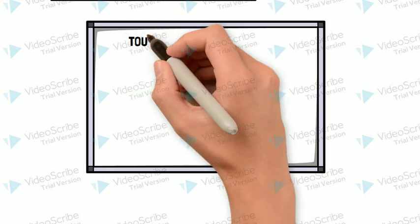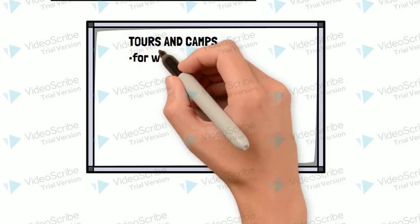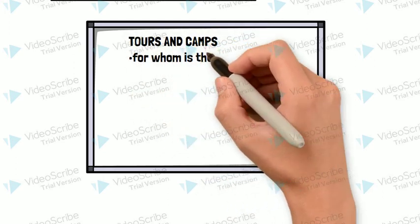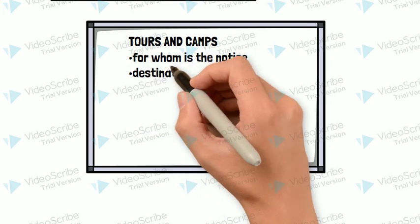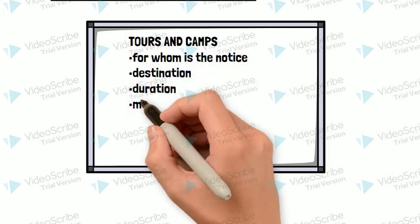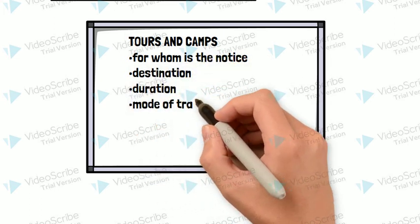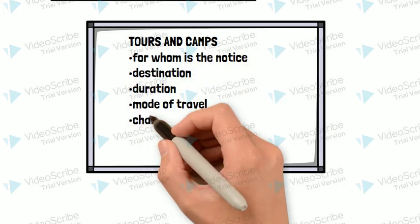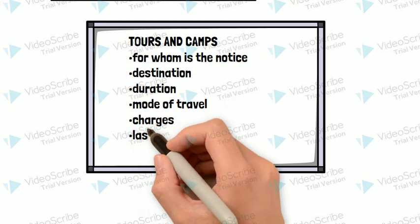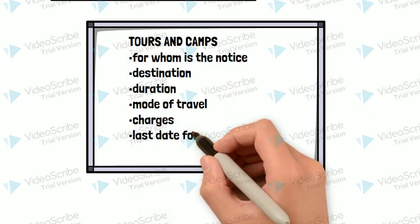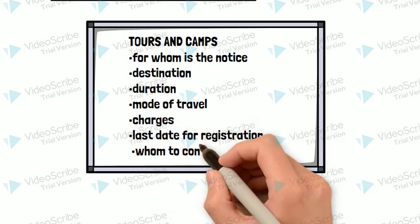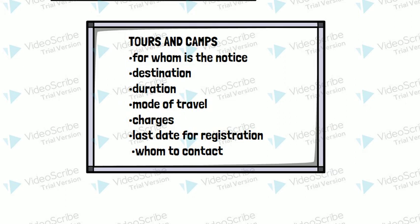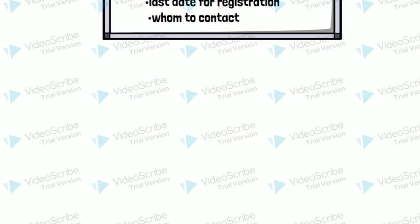The fourth kind of notice writing is tours and camps. Here again we mention the target audience to whom the notice is addressed, the destination, duration, mode of travel, charges, last date of registration, and whom to contact.